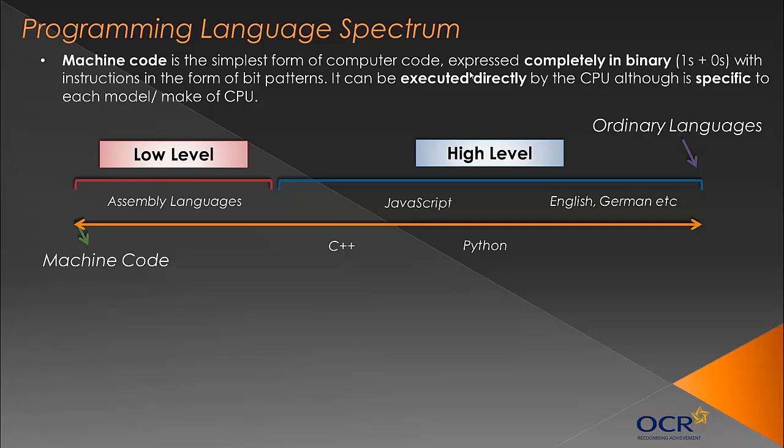It's really worth noting that machine code is specific to each model and make of CPU, because each CPU has its own instruction set and way of representing instructions in machine code. So if you took a stream of ones and zeros and had it executed by a different CPU, it would do something different or may not even work, because they each use different ways to represent instructions. Machine code is unique to each CPU, which is one of the reasons why programming languages are used instead.